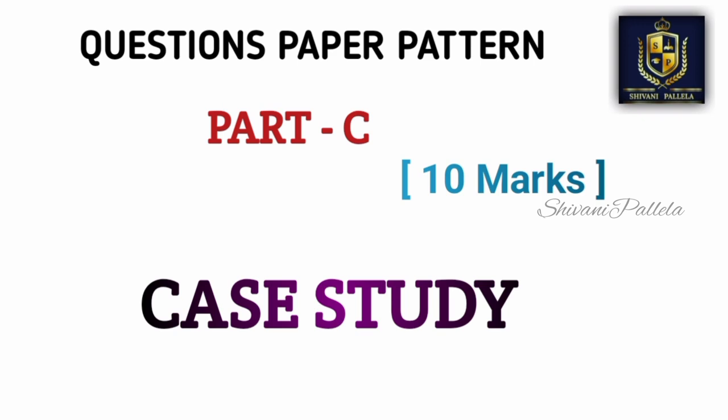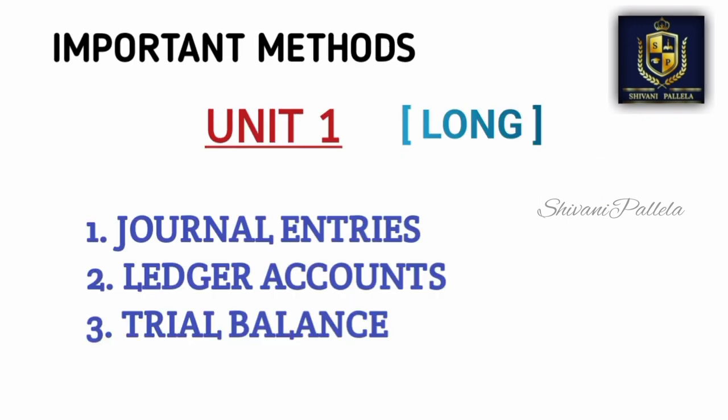In Part B, from the 6th question to the 10th question, each question will have an internal choice like A or B — any one you need to attempt. It may be a problematic or a theory question. As it is a problematic paper, try to give 80% priority to problematics and only 20% to theory. If you learn only theory you will not get any passing marks. You need to be perfect in at least 2 units of problematics.